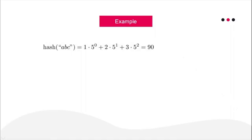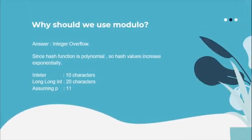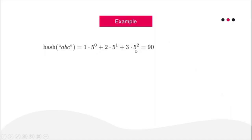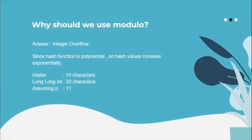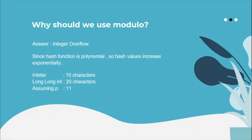Why do we need modulo? The problem is that the polynomial hash value grows exponentially — each term increases the power of p by one. If p=11, even a 10-character string produces a hash value so large it won't fit in a 32-bit integer (range ~10^9). For a 64-bit integer (range ~10^19), even a 20-character string's hash would overflow.